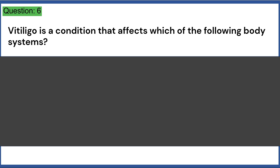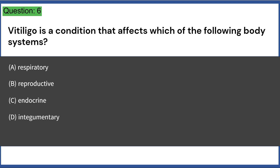Vitiligo is a condition that affects which of the following body systems? A. Respiratory, B. Reproductive, C. Endocrine, D. Integumentary, E. Digestive. Answer: D.